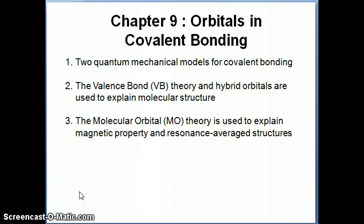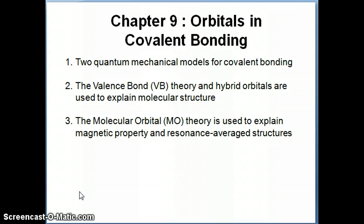Hi everyone. In this topic, I'll be talking about continuing on the topic of chemical bonds. In the previous topic, in topic 8, we talked about how the Lewis model can be used to represent bonding in various types of covalent molecules. We were able to use the Lewis theory of bonding to explain different things like reactivity and particularly the strength of bonds.